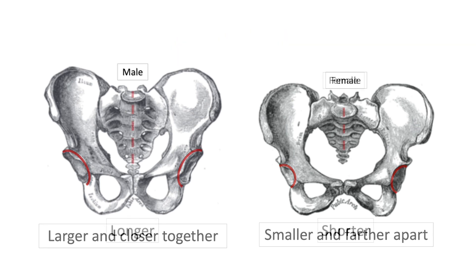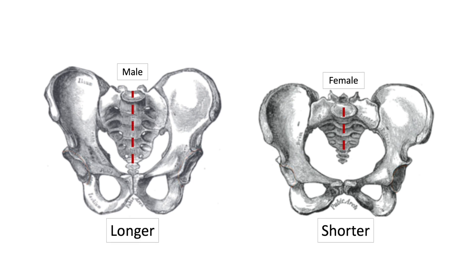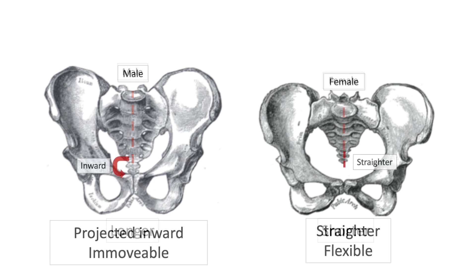The last two differences pertain to the vertebrae. The male sacrum is long, narrow, straighter, and has a pronounced sacral promontory. The female sacrum is shorter, wider, and more curved posteriorly, and has a less pronounced promontory. Lastly, the coccyx in the male pelvis is projected inwards and immovable, while the coccyx of a female pelvis is straighter and more flexible.